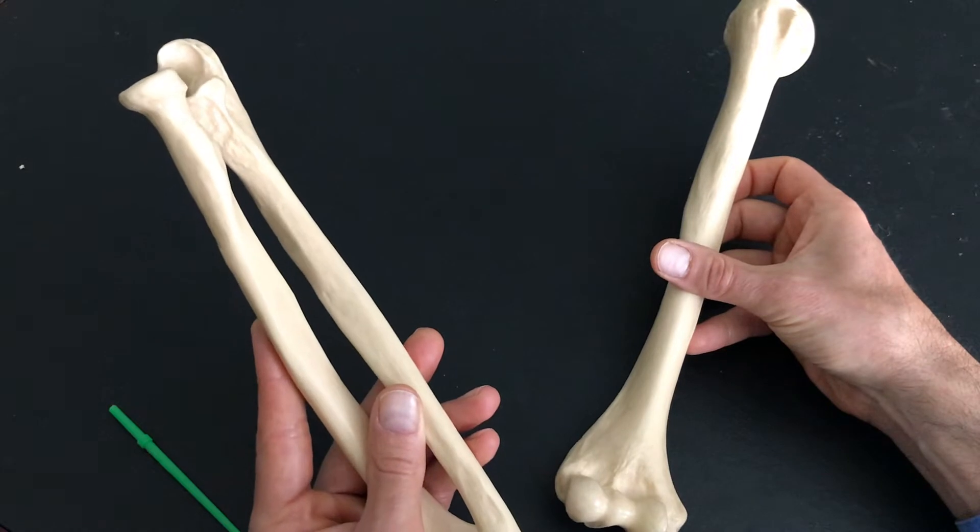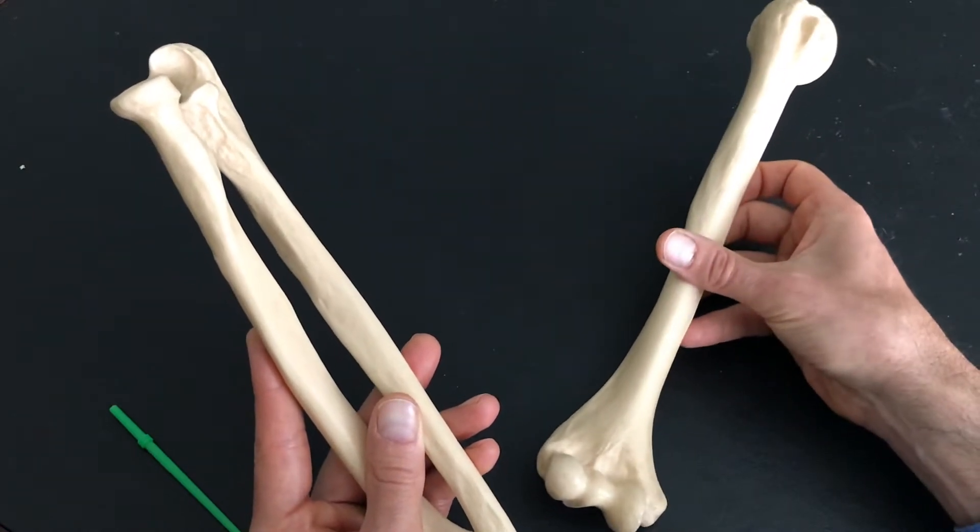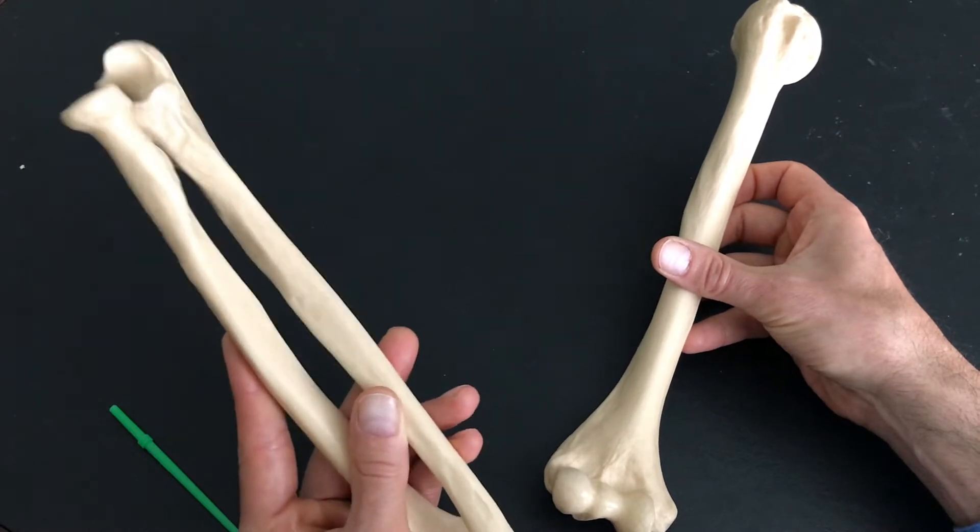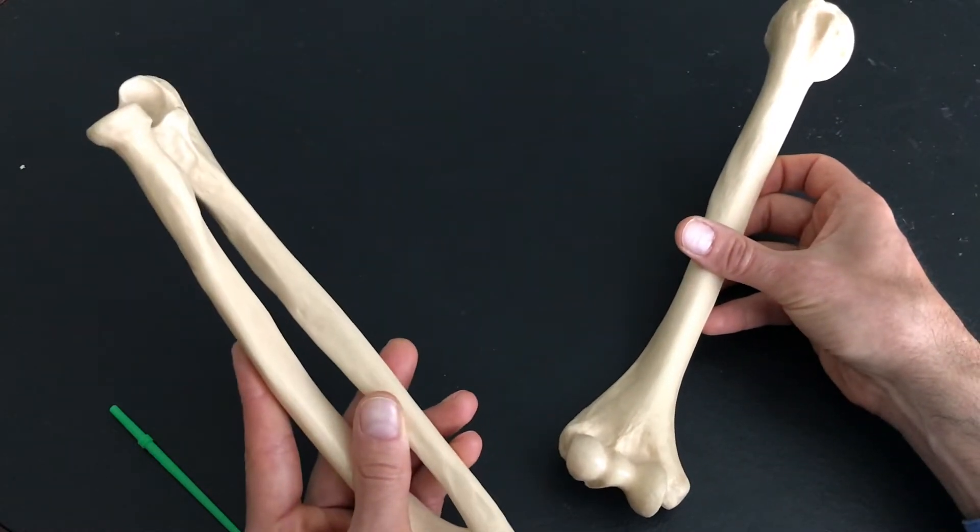Antibrachium means forearm. Brachium is arm. Anti, think of before. Antibrachium, before the arm. So before the arm comes the forearm.